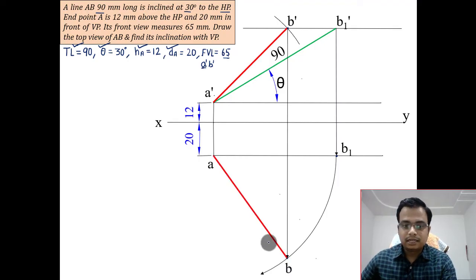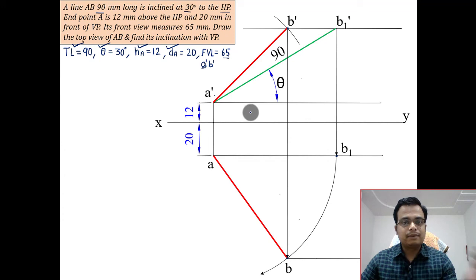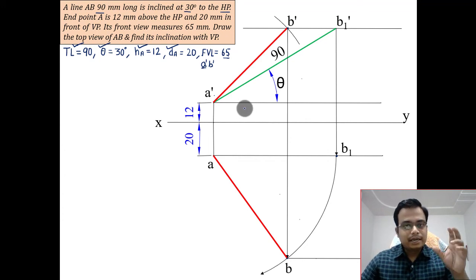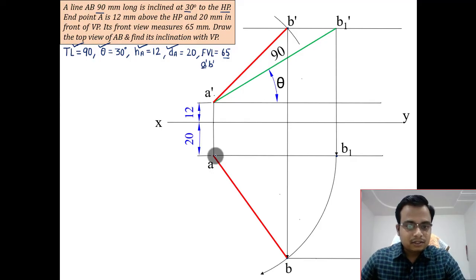And this over here, if you want to make the true length, this green colored line is meant for the true length. So the true length remains same above xy or below xy. So in your compass, take a radius of 90 millimeters, and then with this a as the center, cut an arc. And join this. This is going to be the same stuff, this is 90 millimeters also.